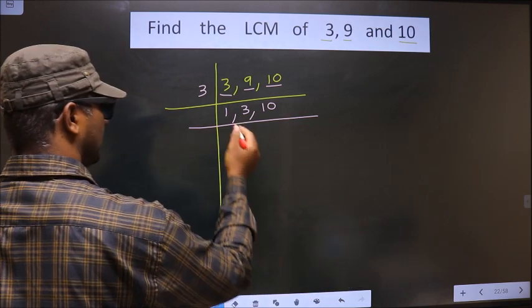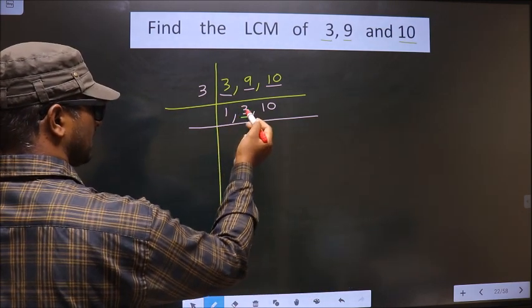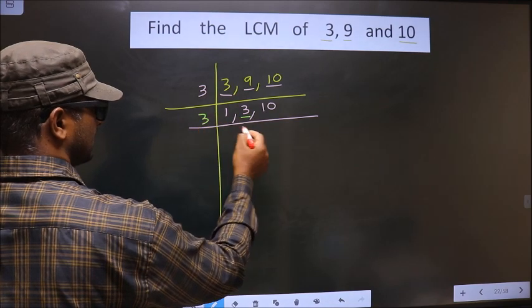Now here we got 1. So focus on the next number that is 3. 3 is a prime number.